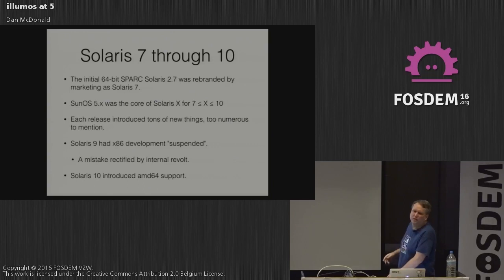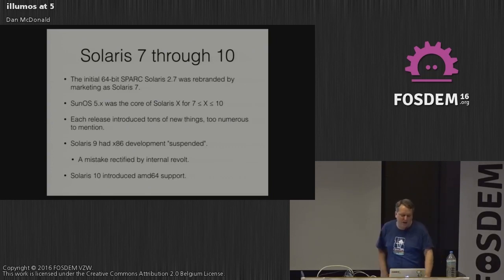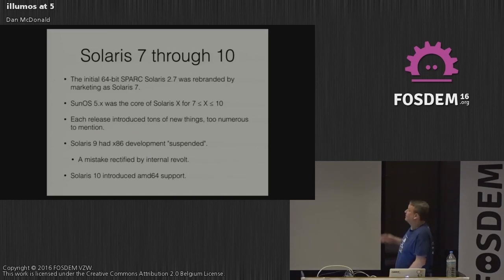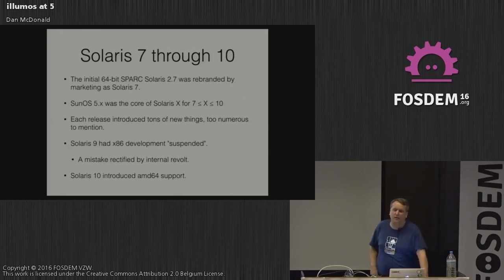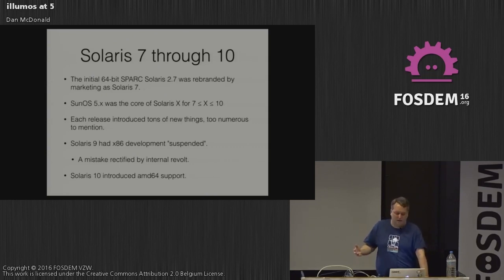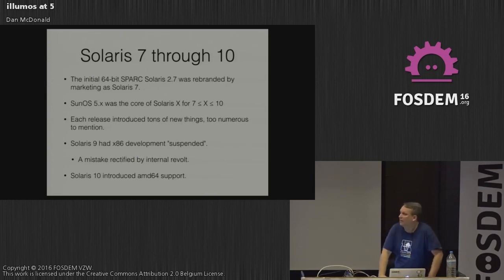The initial 64-bit SPARC port was going to be Solaris 2.7, but marketing decided the number needed to be bigger, so it became Solaris 7. SunOS 5.x was the core of Solaris 7 through 10. Each release introduced tons of new things — I liked 7 for FastMD5, 8 for IPSec, 9 for IKE, and 10 for NAT Traversal, but that was just what I was working on.